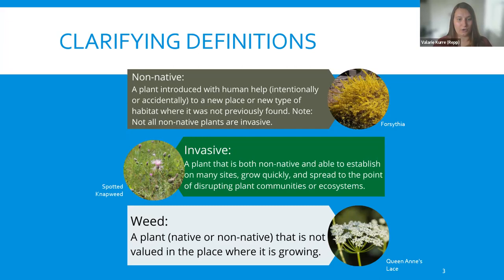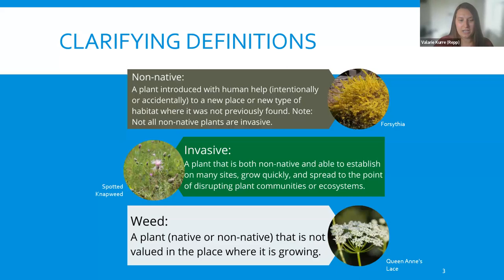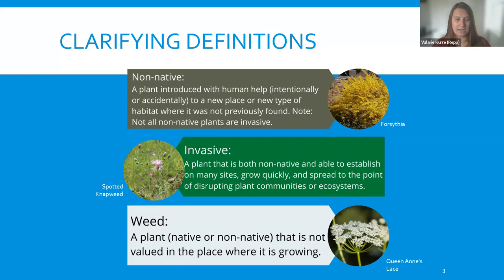An invasive plant is both non-native and able to establish on many different growing sites, grows very quickly, spreads quickly, and disrupts other plants in that ecosystem. Things like spotted knapweed, sericea lespedeza, and multiflora rose can move in and in just a few years become the dominant plant species. A weed, by definition, can be a native or non-native plant growing somewhere it's just not desired. For example, Queen Anne's Lace — technically native — but if it starts encroaching on a prairie or glade, I'll try to keep it out because it's not desirable in that ecosystem.